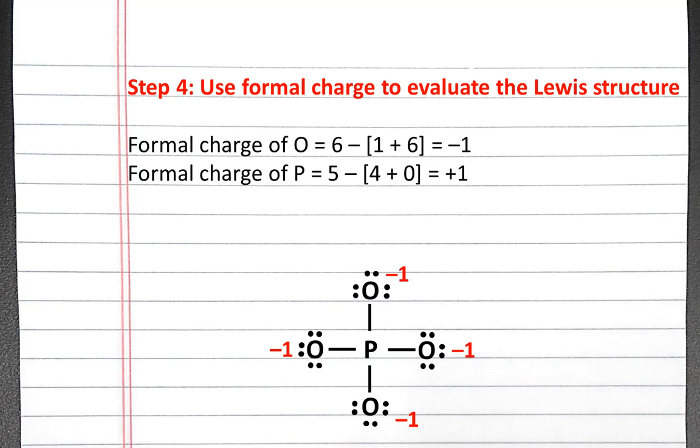We can calculate the formal charge of phosphorus. The neutral atom of phosphorus has five valence electrons, and this phosphorus has four bonds and zero lone pair electrons. So its formal charge is plus one.